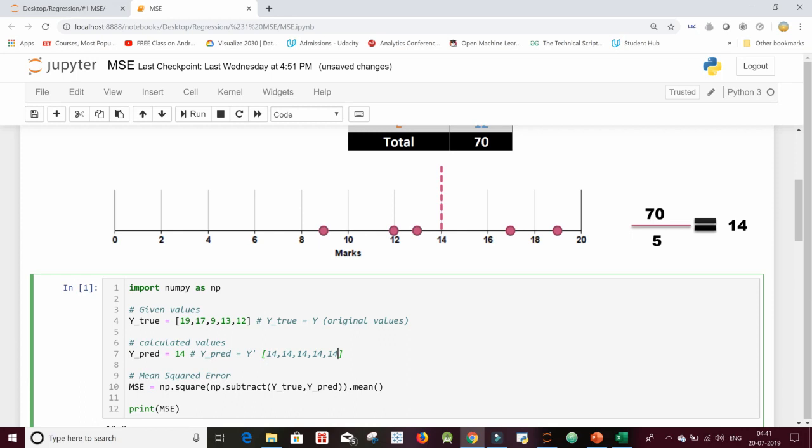And now we are calculating the mean squared error. So let me write it for you over here. What we are doing, because we are using the alias np for numpy, I am subtracting...